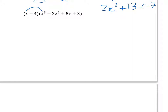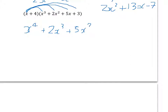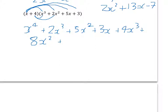So firstly: x times x cubed is x to the power of 4; x times 2x is 2x to the power of 3; x times 5x is 5x squared; and x times 3 is 3x. That's the first part. Now doing the same with the 4: 4 times x cubed, plus 4 times 2x squared, plus 4 times 5x which is 20x, plus 4 times 3 which is 12.